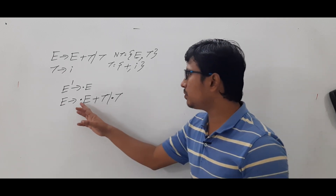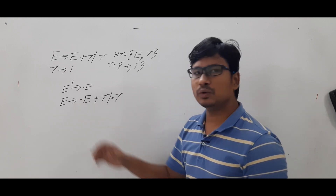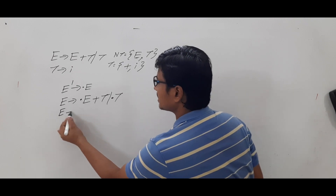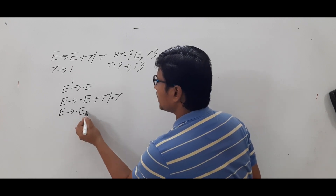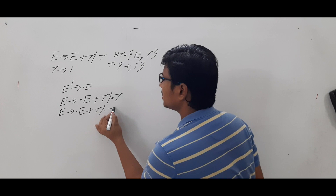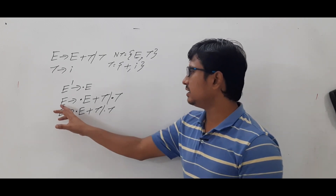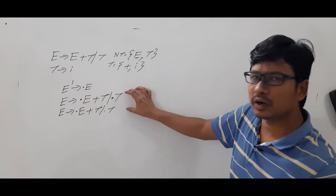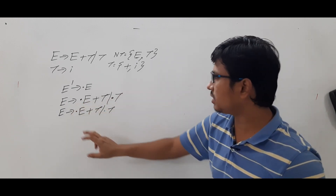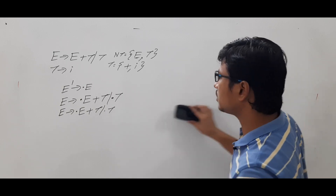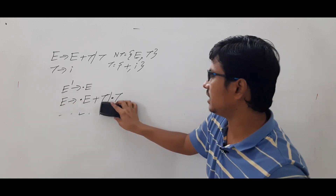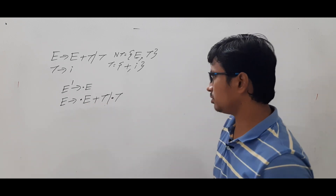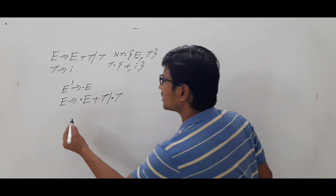Now a lot of people get confused here. Again you have dot E, so they write E → •E + T | T again. But look — these two productions are the same. Since they are repeated, we do not need to write them again. This is one important point.